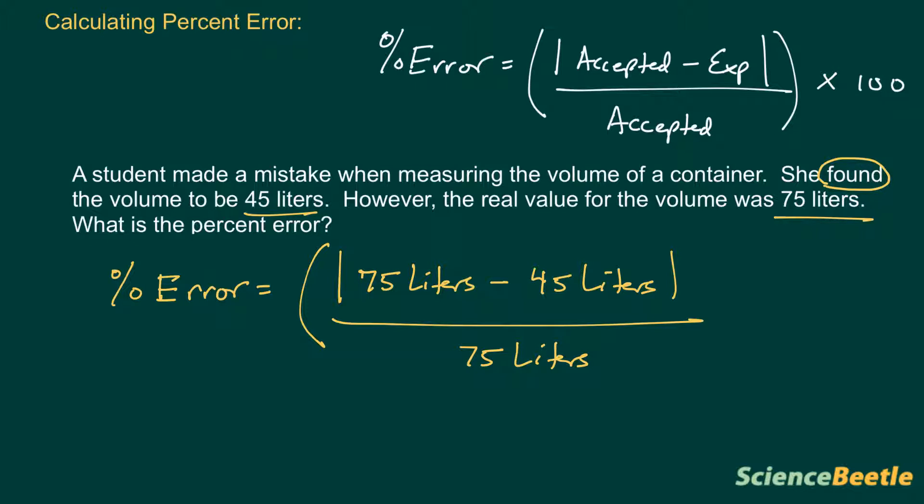We get whatever result we've got here and we're going to multiply that by 100, and that should give us the percent error. So let's do this math here and simplify. Let's do this in steps. First, let's take the numerator part. We take the 75 and we're going to subtract 45 from that. That's going to give us a number of 30 liters, and we're going to divide this by 75 liters.